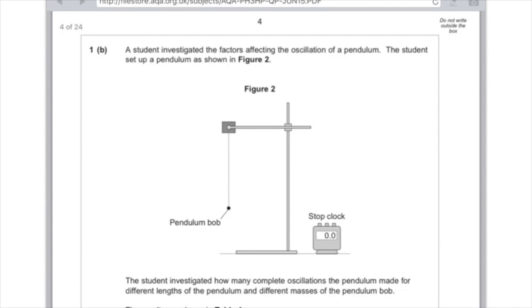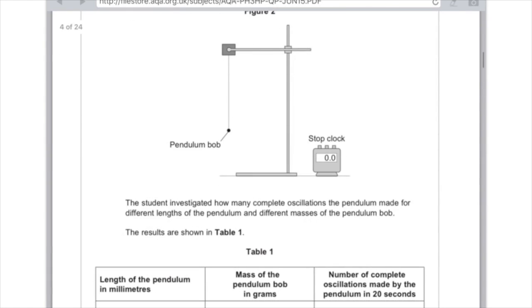1b. A student investigated the factors affecting the oscillation of the pendulum. The student set up a pendulum as shown in figure 2. So we've got the pendulum bob, and it's going to be swinging, and we're using a stock clock to measure the time. The student investigated how many complete oscillations the pendulum made for different lengths of the pendulum and different masses of the pendulum bob. Remember, complete oscillation is when the pendulum blob moves up to its high position, back down, back up to the other side, and then finally returns to the bottom position.